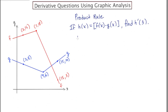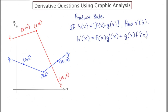I'm going to start by writing this out. The derivative of h is going to be found by using the product rule, which is the first function times the derivative of the second function, plus the second function times the derivative of the first function. The question asks us to find the derivative of h at x equals three, so we replace every x value with three. This becomes f of three times g prime of three plus g of three times f prime of three.